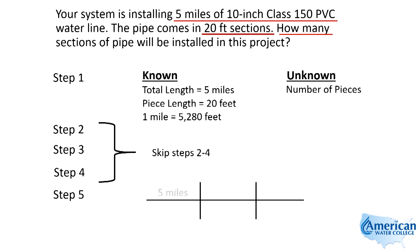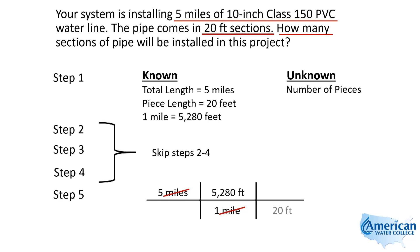We're going to start with our five miles — that's our total distance — and convert that to feet. To go from miles to feet, there's one mile for every 5,280 feet. So we're multiplying five miles times 5,280 feet per mile, which eliminates the miles and leaves us with feet. Then, since each pipe is 20 feet long, we put 20 feet per one pipe, which eliminates the feet and leaves us with total pieces of pipe.